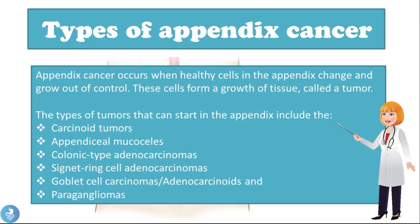The types of tumors that can start in the appendix include carcinoid tumors, appendiceal mucoceles, colonic type adenocarcinomas, signet ring cell adenocarcinomas, goblet cell carcinomas (also called adenocarcinoids), and paragangliomas. Let's take each of them and explain them further.